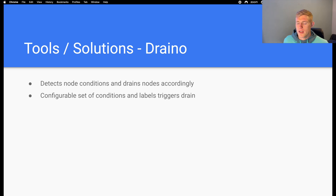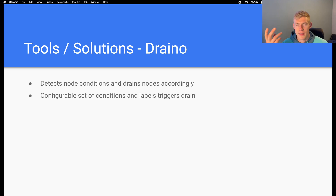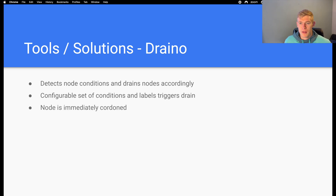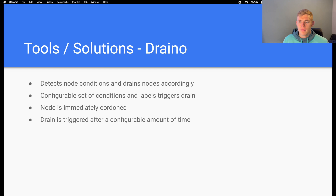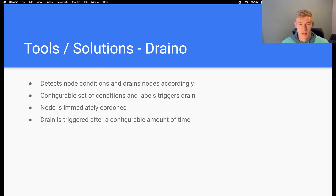There are a configurable set of conditions and labels that trigger a drain. For example, we could say there are two concurrent alert types that have to be firing — if those alert types are firing, SKURO will set node conditions, and if those two node conditions are firing, DRANO will drain the node. The node is immediately cordoned upon DRANO detecting those node conditions, and then we can configure the amount of time before going ahead and draining the node. We may want to ensure that the problem is persistent for a period of maybe five or ten minutes before removing all of the workloads.